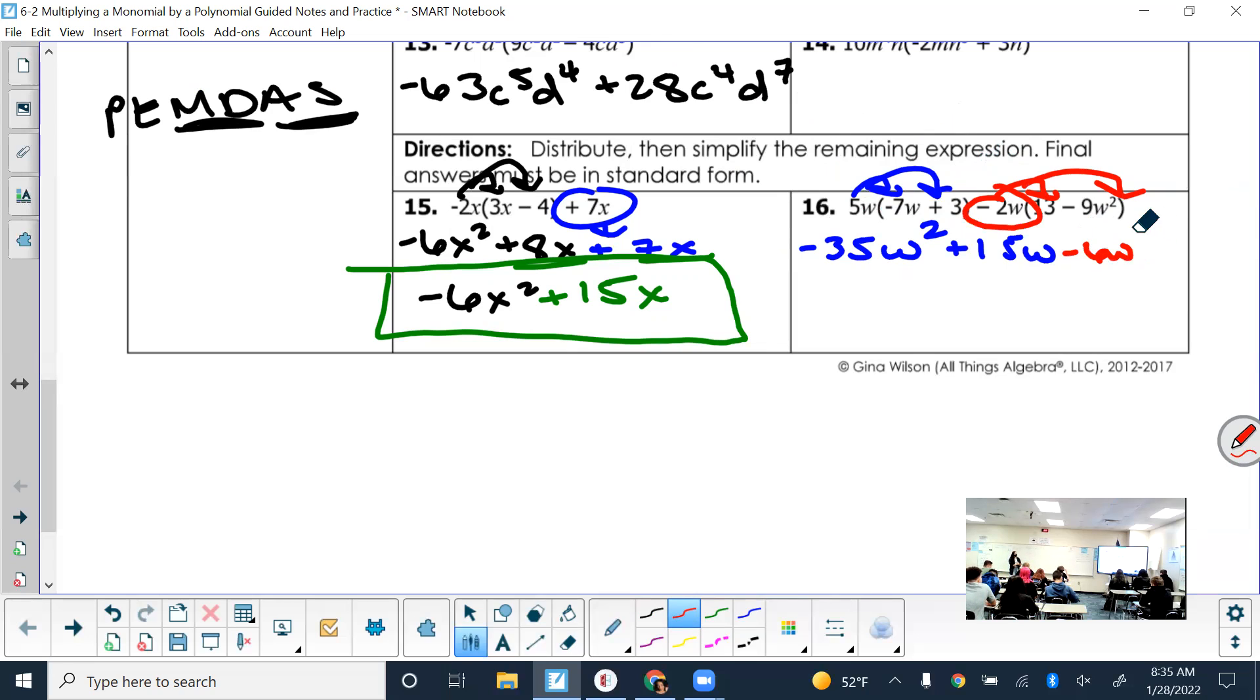And then we still have this. I could bring it down and then distribute, but I'll just go ahead and do that in this step. Just don't forget that you need to keep the sign that's in front of each term. So make sure when you're multiplying that you're multiplying a negative 2w. So what do we get from distributing that? Negative 6w. And then negative 2w times negative 9w squared? Plus 18w cubed.